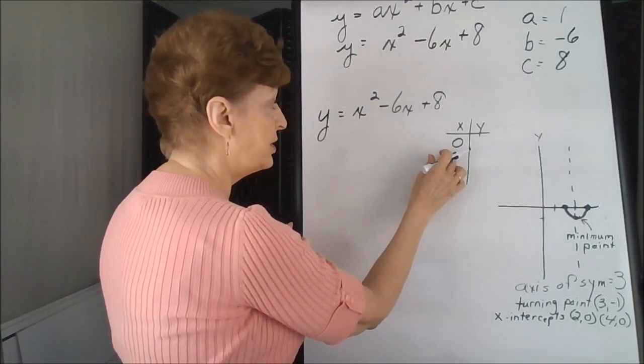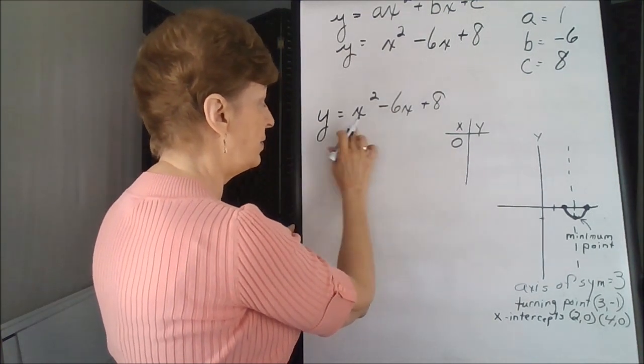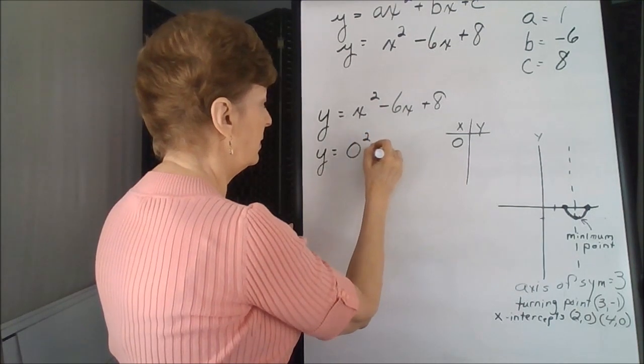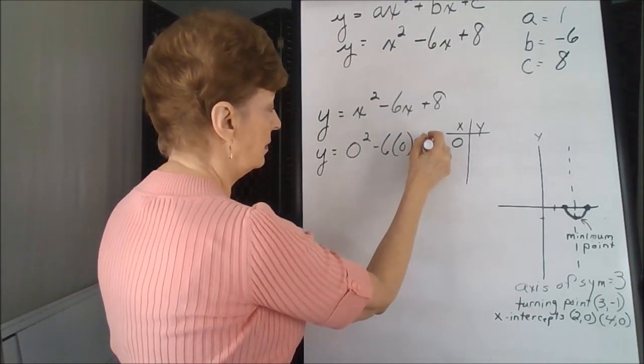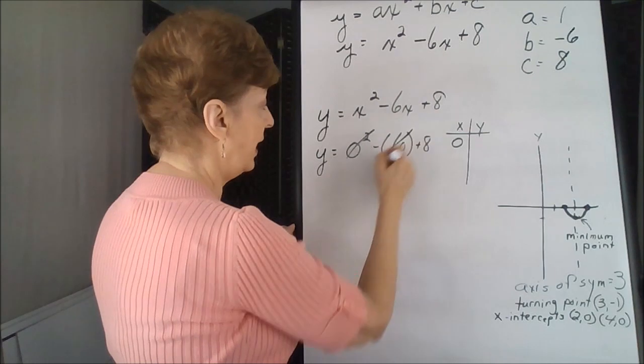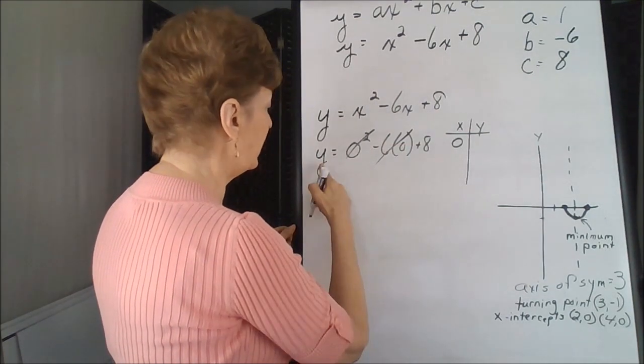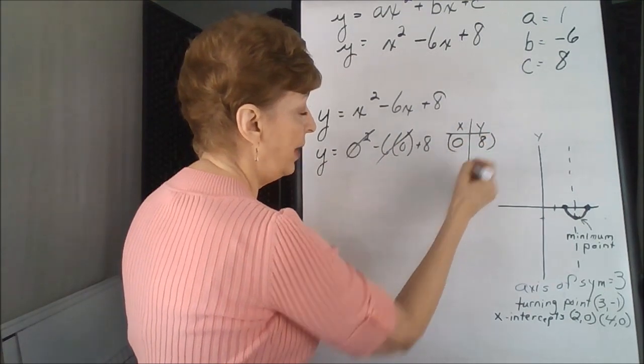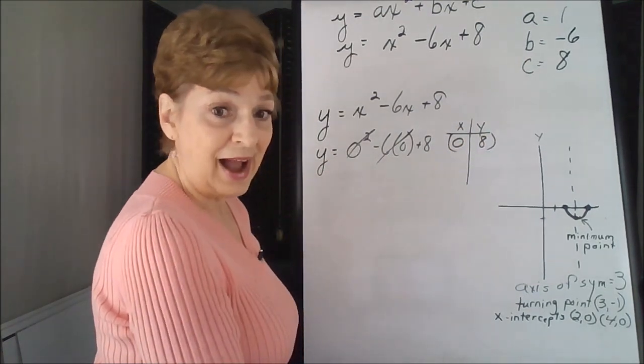We can just substitute our x value into our equation, and it looks like this. So that's a zero, that turns to zero when you do the calculation, so y is equal to 8. And that's our ordered pair for the y-intercept.